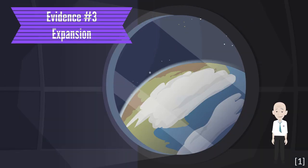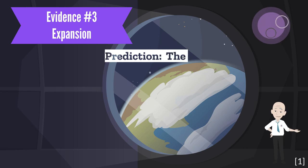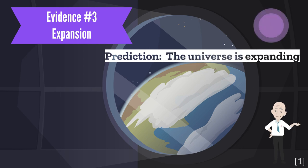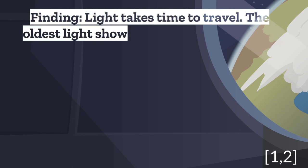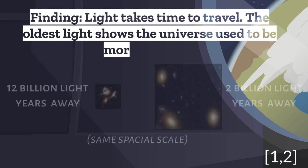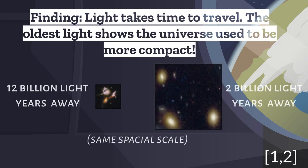Lastly, the Big Bang says that the universe is expanding. Now, light takes time to travel. As we receive the oldest light in the universe from the furthest reaches of space, we can see that the universe used to be more compact.